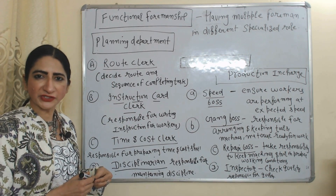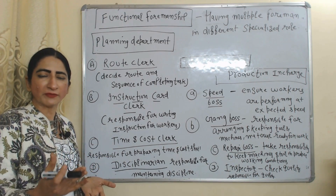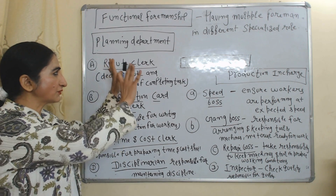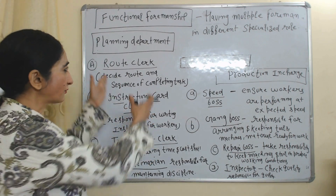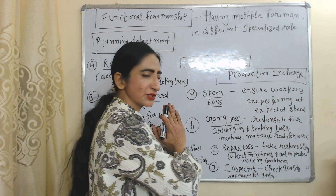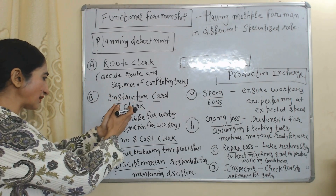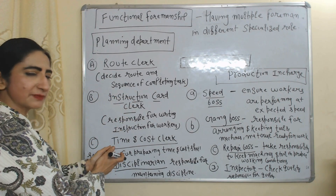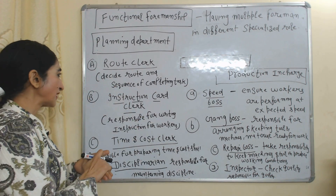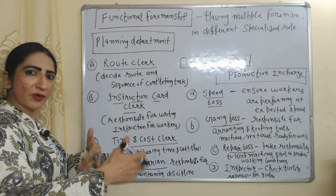The first technique is functional foremanship, which means having multiple foremen in different specialized roles. There are a total of eight foremen — four will work in the planning department and four will work as production in charge. The planning department includes the route clerk, instruction card clerk, time and cost clerk, and disciplinarian. The route clerk will decide the route and sequence of tasks. The instruction card clerk will be responsible for writing instructions for workers.